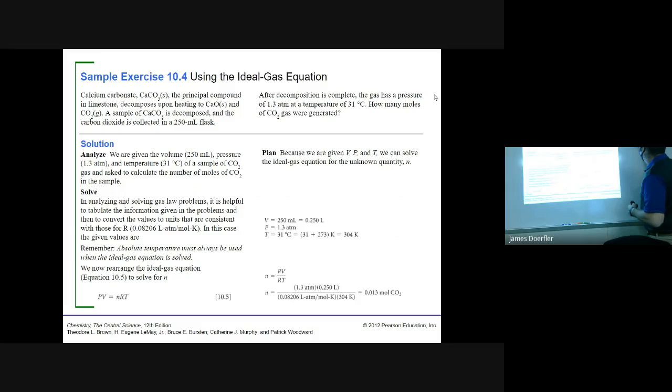Now we take PV=nRT and we solve for N. We're going to divide both sides by RT. Once we've got that arranged, we plug in our values. Pressure is 1.3 atmospheres. Volume was 0.250 liters. R is 0.08206 liters times atmospheres over moles times Kelvin, and multiplied by our temperature of 304 Kelvin.